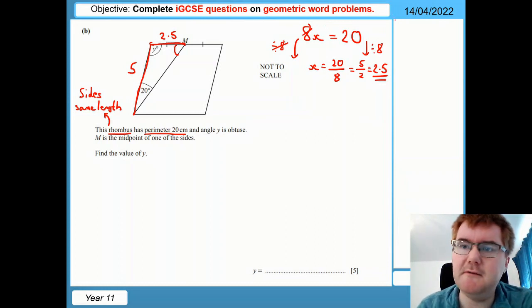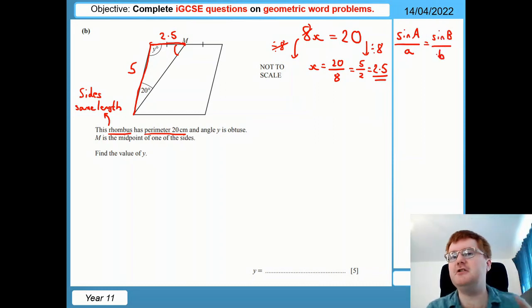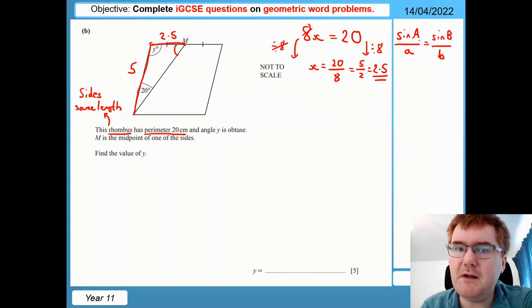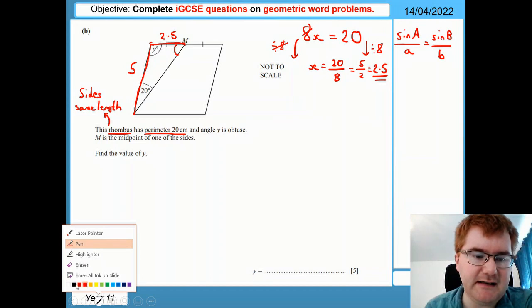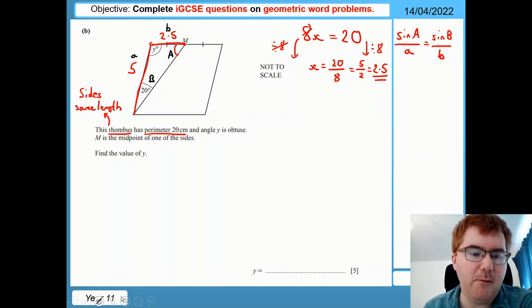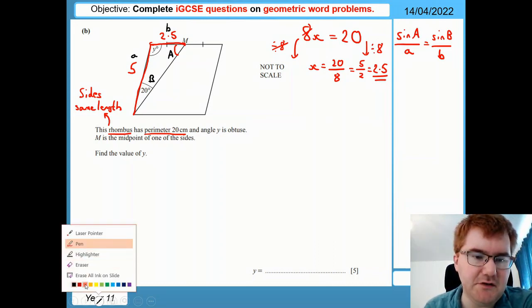Now, the sine rule, just to remind you, we're looking for an angle here, is sine A over A equals sine B over B. If you haven't checked out my all of IGCSE trigonometry in an hour, then please do. So what I'm going to do is just make sure I label the angles nice and carefully. So this angle here is going to be my big A. The side opposite will be small A. The next angle will be big B. And then the side opposite, big B, will be small B.